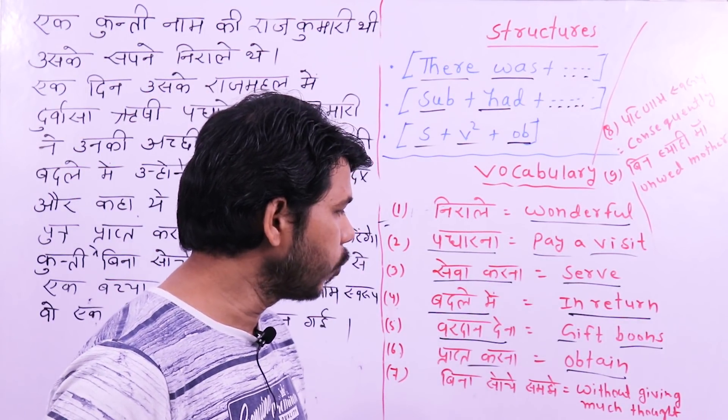कुंती ने बिना सोचे समझे — without giving much thought — कुंती ने सूर्य देवता से एक बच्चा मांगा — Kunti asked sun god for a child. और परिणामस्वरूप — and consequently — वो एक बिन ब्याही माँ बन गई — she became an unwed mother.